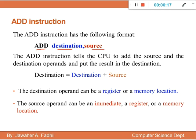The ADD instruction tells the CPU to add the source and the destination operand's value and put the result in the destination. That means the value in the source operand will be added to the destination operand. The result replaces the destination value, while the source value does not change.